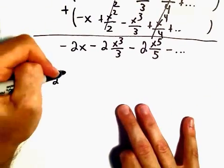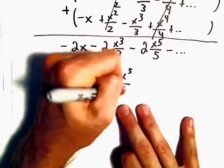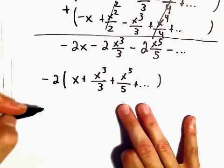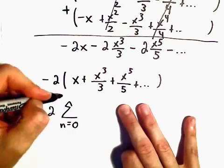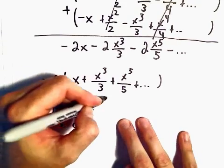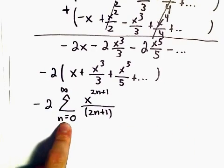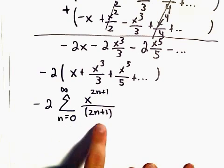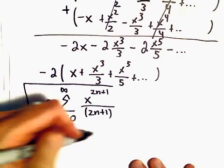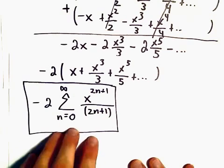We can factor negative 2 out front and we have x plus x cubed over 3 plus x to the fifth over 5, etc. So we've got negative 2 times the series n equals 0 to infinity of x to the 2n plus 1 over 2n plus 1. Notice when we plug in n equals 0 we get x to the first over 1, when n equals 1 we get x cubed over 3, etc. This is our nice compact series representation for our original function.